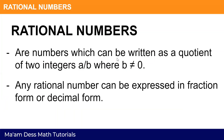Rational numbers are numbers which can be written as a quotient of two integers, A over B, where B is not equal to zero. Any rational number can be expressed in fraction form or decimal form.